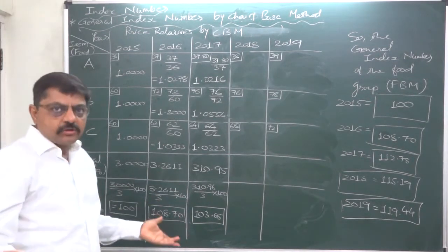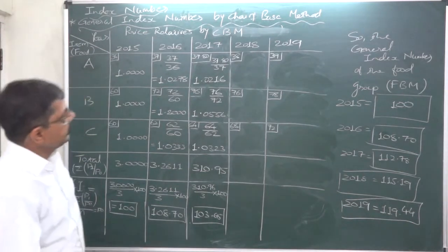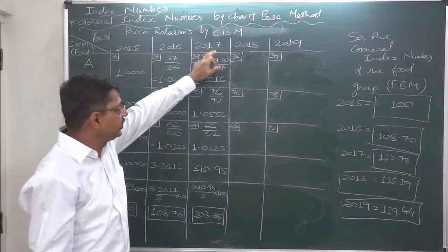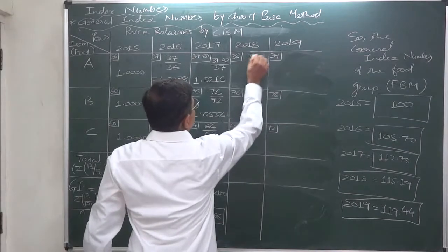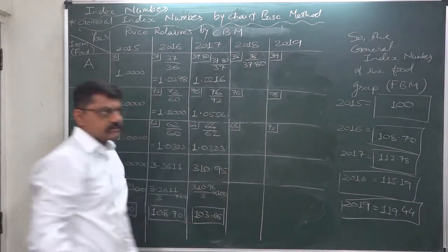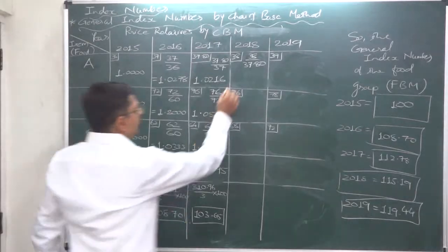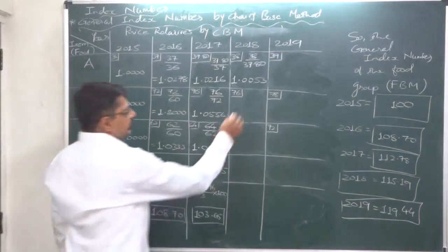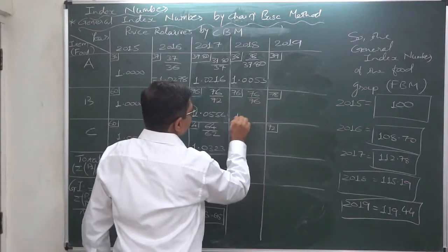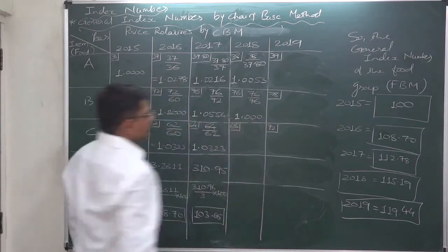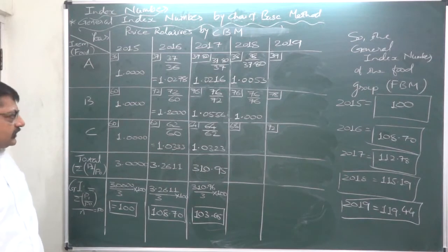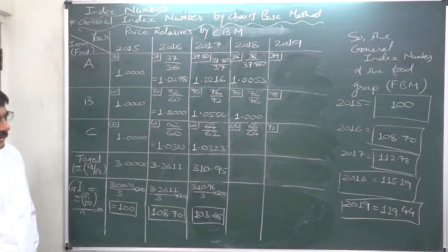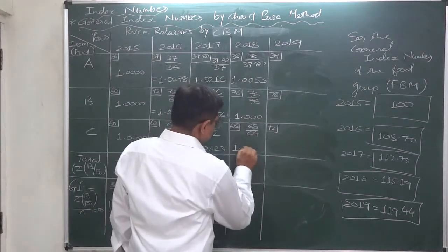For 2018, the base year will be the preceding year 2017. Item A: 38 divided by 37.8 gives 1.0053. Item B: 76 divided by 76 equals 1 — no change in the price of B in 2018. Item C: 68 divided by 64 gives 1.0625.